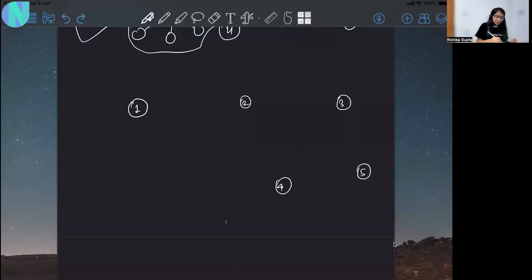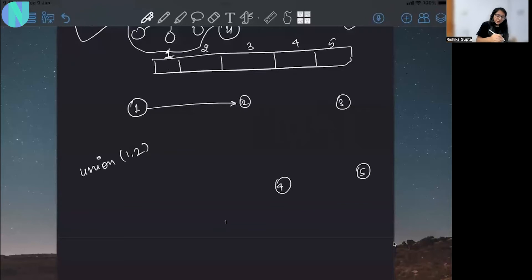Let's take an example. Let's say you have a union operation - union of 1 and 2. What will you do? You have simply connected to your parent array and updated like this. For simplicity I am starting the index from 1. One parent is 2, so you have to write in one parent array 2 here, then 3, 4, and 5.